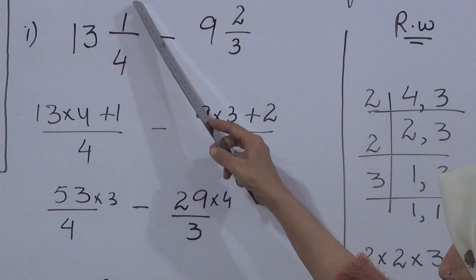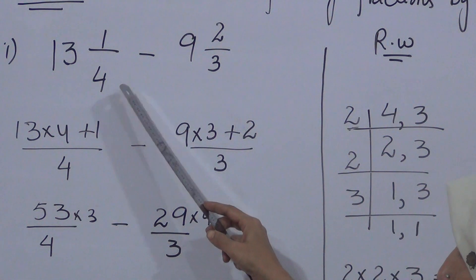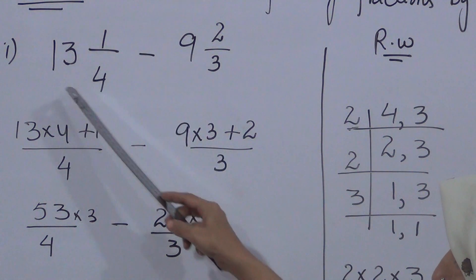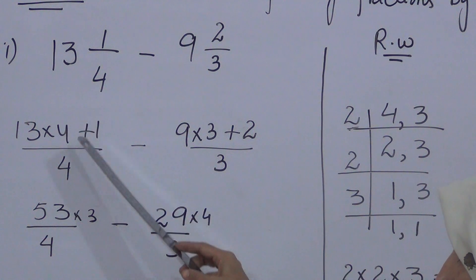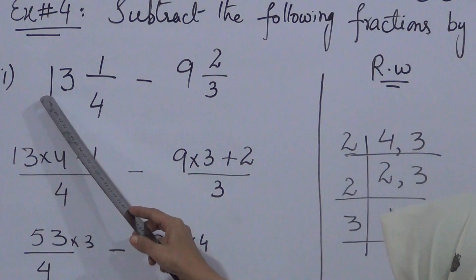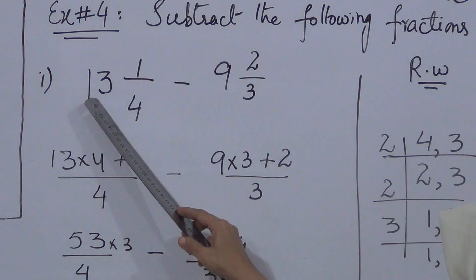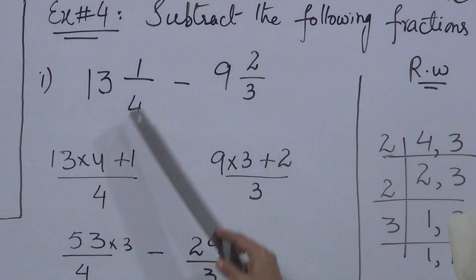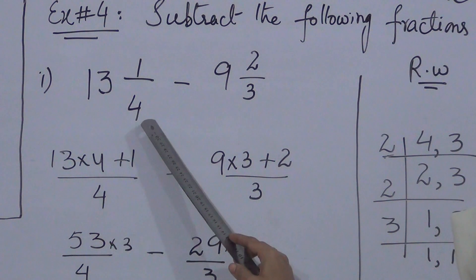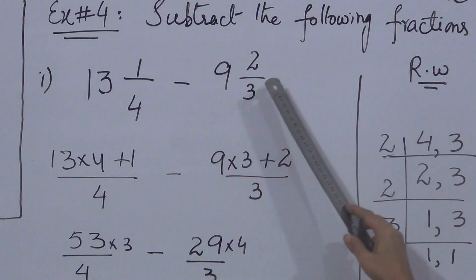The first fraction is a mixed number; the second is also a mixed number. First we have to regroup by converting into improper fractions. We convert the mixed number to improper fraction as we did in Exercise 1 — multiply the whole number by the denominator and add the numerator. For the second number, if it is a mixed number, convert it to improper; if not, leave it as is.